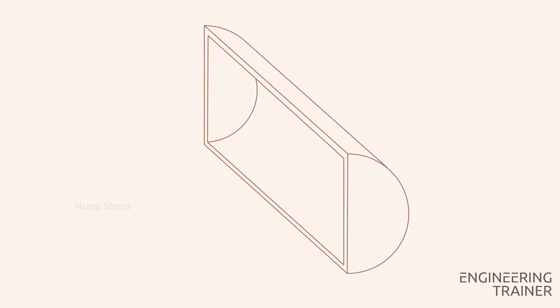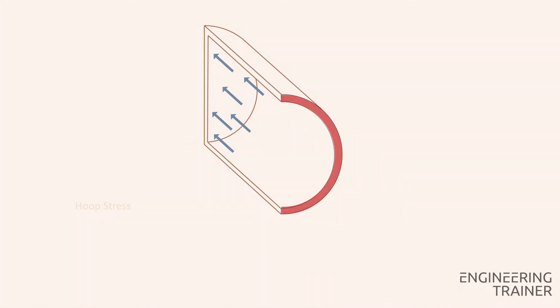However, the pressure also provides a force on the closed ends of our cylindrical geometry. This pressure thrust also tends to pull the pipe apart, which is again counteracted by the material, but now in the axial direction. Hence an axial stress is also present.